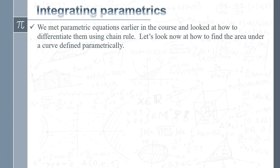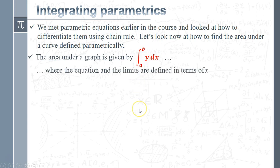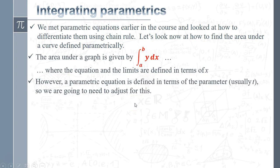We knew that to differentiate parametrics we had to use the chain rule. Let's have a look at the equivalent for integrating, which is the area under the curve. The area under any graph is given by integrating y between the limits. What we've got to do is essentially adapt this for parametrics. The equation has y defined in terms of x and the limits are defined in terms of x — we need to adjust this so everything is defined in terms of the parameter, which in most cases will be t. We'll use a bit of chain rule within our integral.